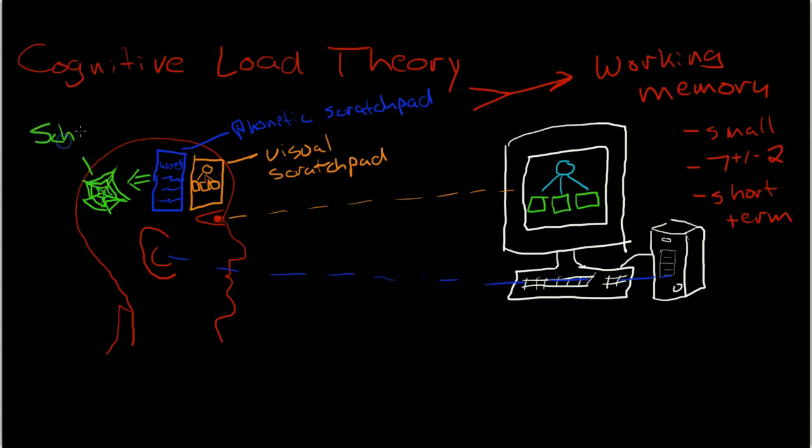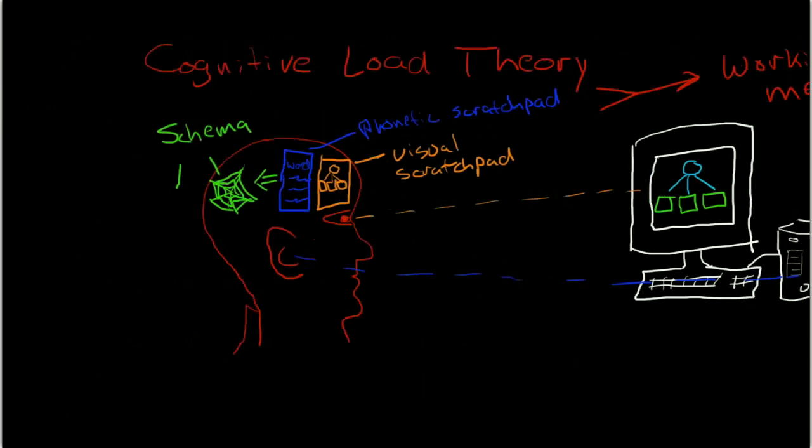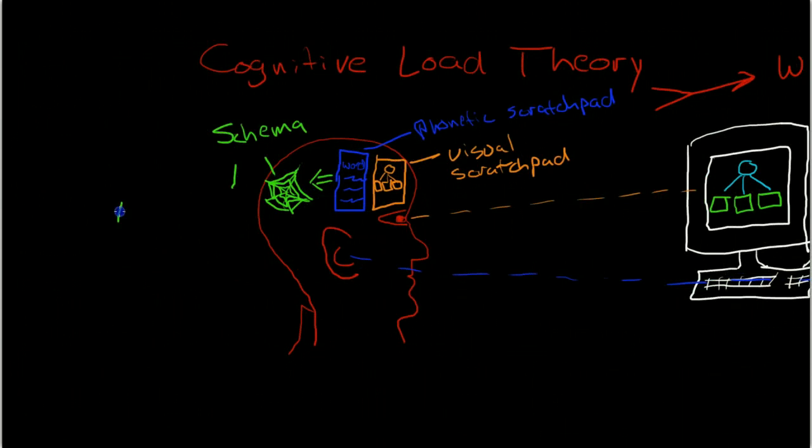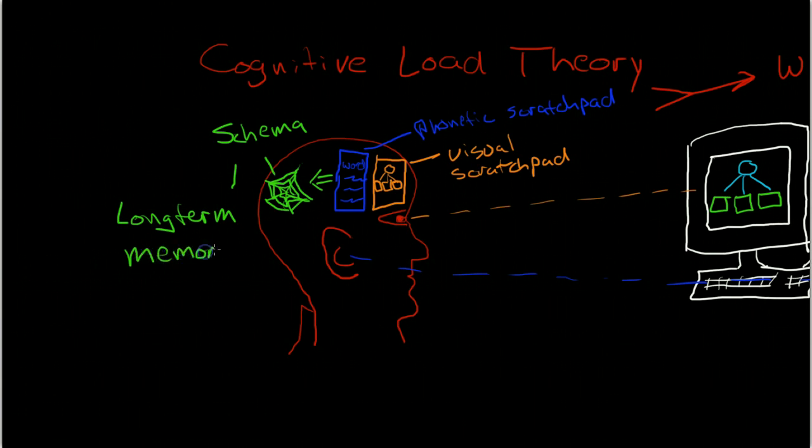Long-term memory, unlike short-term memory, is vast and can hold very complex data. Again, the long-term memory holds memory in the form of schema, which is complex connections between various data. And the long-term memory is both vast, can hold vast amounts of data, and very complex data compared to the very finite working memory.